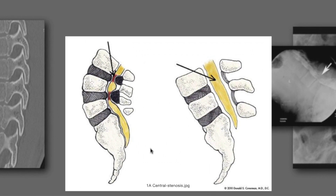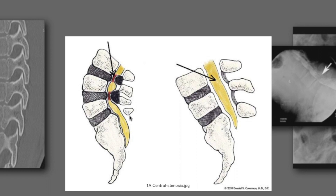This is to remind everybody that the spinal canal changes in volume with flexion and extension. With flexion it opens by 30%, and with extension it narrows quite a bit. So flexion extension is an important part of understanding the pathoanatomy of the spine.